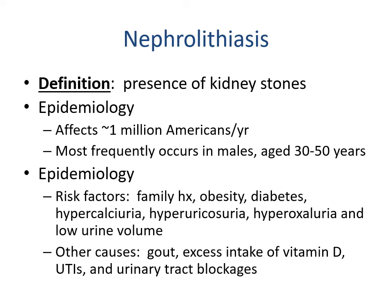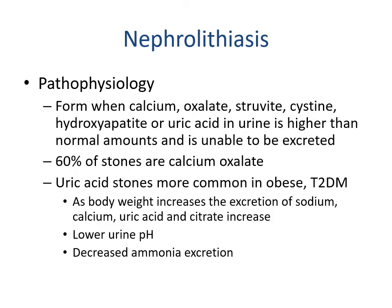Nephrolithiasis — nephro meaning kidney, lithiasis meaning stones — refers to kidney stones. This affects approximately 1 million Americans per year, most frequently in men aged 30 to 50. Risk factors include family history, obesity, diabetes, high levels of calcium in the urine, high amounts of oxalates, and low urine volume. Other causes include gout, excessive vitamin D intake, UTIs, and urinary tract blockages. Stones form when calcium, oxalate, struvite, cysteine, hydroxyapatite, or uric acid in the urine is higher than normal and cannot be excreted.